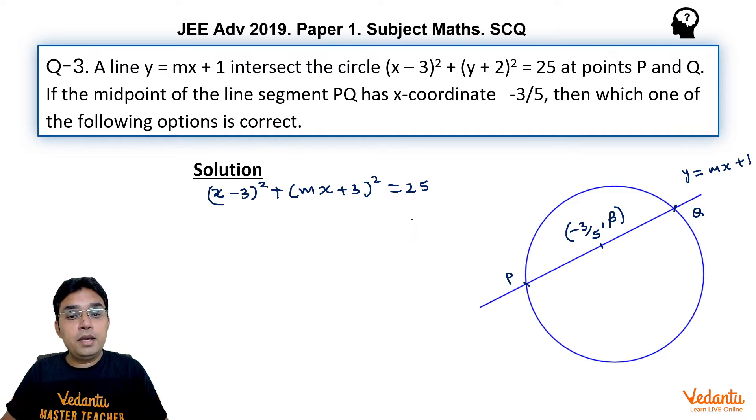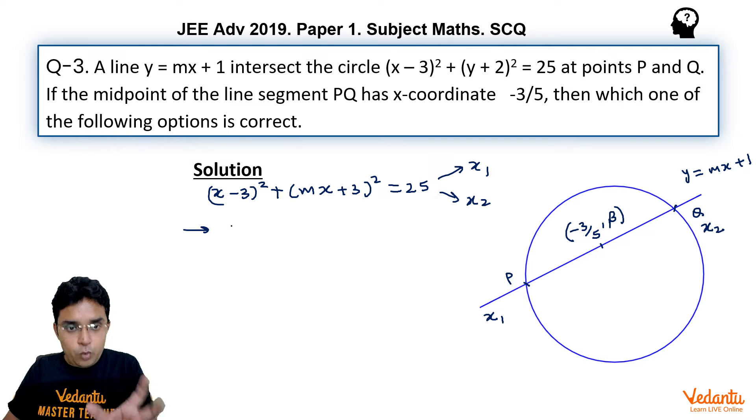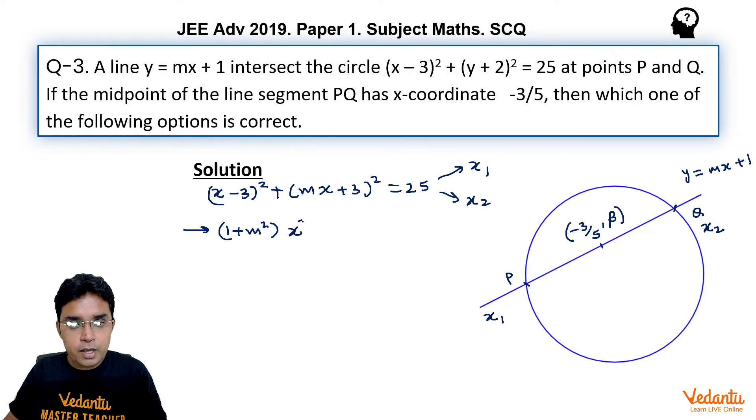Now, this is quadratic in x only which should give roots x₁, x₂ which will be the x-coordinates of P and x-coordinates of Q. Now, if we open this quadratic, if we open these brackets, we get (1 plus m²)x² plus (6m minus 6)x minus 7 equals 0. Now, sum of roots we can take x₁ plus x₂, it would be minus of 6 common (m minus 1) upon (1 plus m²).